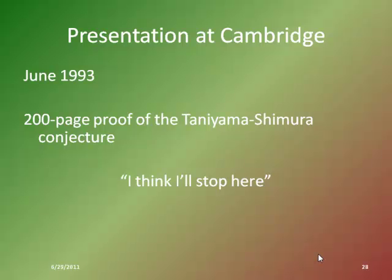By proving the Taniyama-Shimura conjecture, Wiles connected their work to Frey's conjecture — that if Taniyama and Shimura were right, Fermat's Last Theorem would be proven. In effect, he has proven Fermat's Last Theorem to be true: there are no integer solutions for that problem. He hasn't published yet, and so that's the next step in the process.